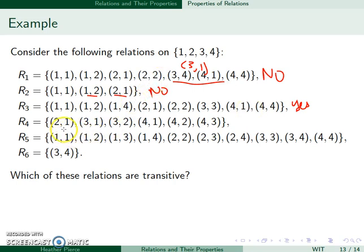R3, well, or R4, sorry. 2,1 can't combine with anything. 3,1 can't combine with anything. 3,2 and 2,1 would combine to give me 3,1. 4,1 can't combine. 4,2 and 2,1 gives me 4,1. And then 4,3 and 3,1 gives me 4,1. In addition, 4,3 and 3,2 would give me 4,2. So this one is transitive.